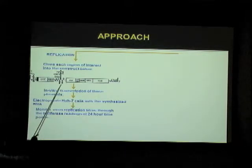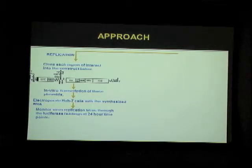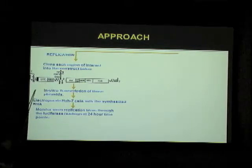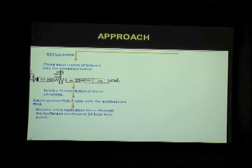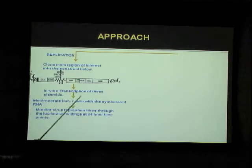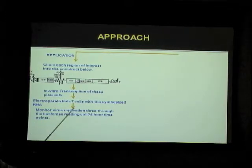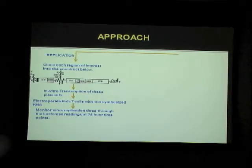This construct lacks the structural proteins — that is, the core and the envelope proteins — and therefore can replicate efficiently in culture but would not be able to assemble and leave the cell, so virus infection is not possible. This construct helps us monitor replication separately. It also has a luciferase reporter gene, which helps us measure replication levels at different time points. We then perform an in vitro transcription of these plasmids and, since it's an RNA virus, electroporate human hepatoma cells with the synthesized RNA, then monitor replication levels through luciferase readings every 24 hours.